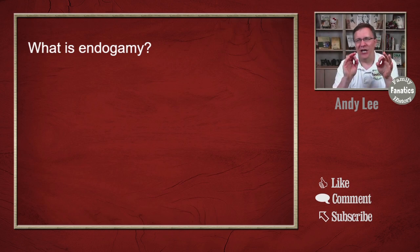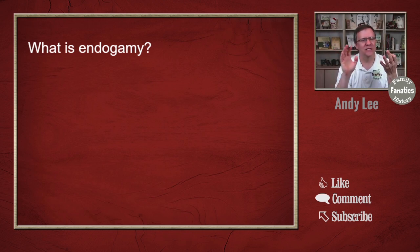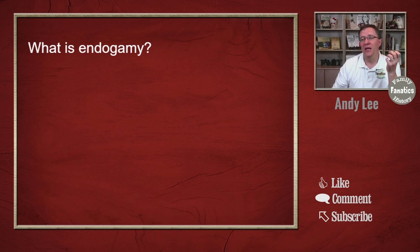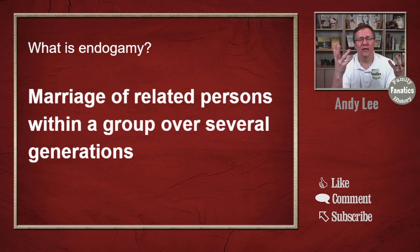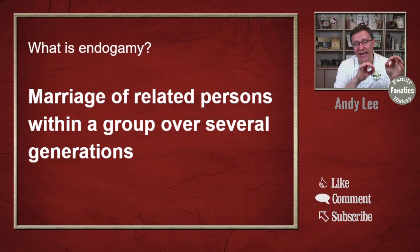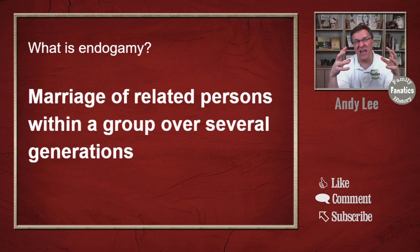So let's look at endogamy. What is endogamy? You might have heard of this, especially in relation to certain populations like the Akkadians, the Ashkenazi Jews, or the Polynesians. Endogamy is the marriage of related persons within a group over several generations. In a nutshell, this means you basically end up having the same people or the same families all intermarrying over a long period of time.